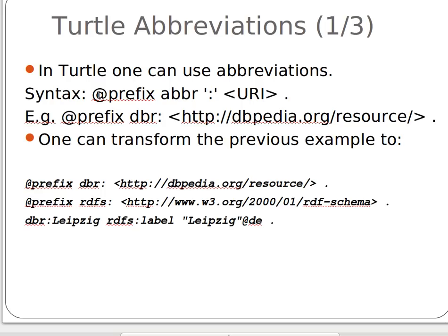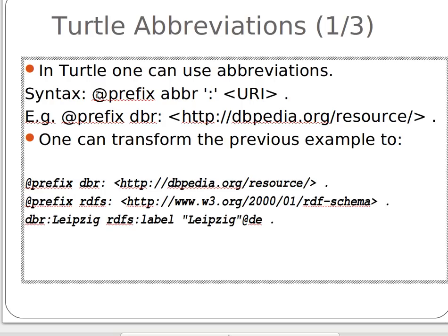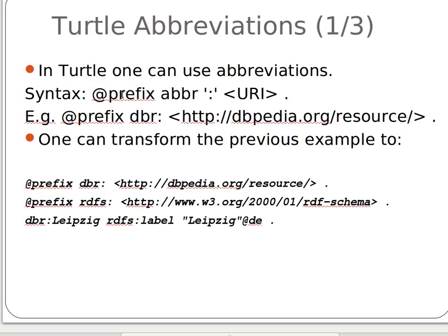The syntax of prefixes is: we use the at-symbol, then the word 'prefix', then the prefix name, a colon, and then the URI we want to use the prefix for, ending it with a dot. For example: @prefix dbr: followed by the DBpedia resources URI and a dot.